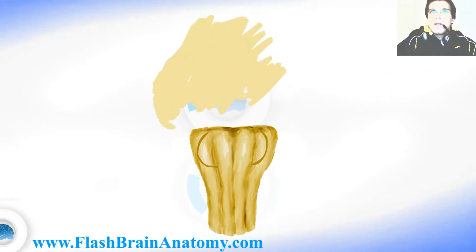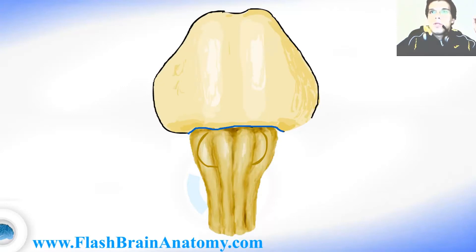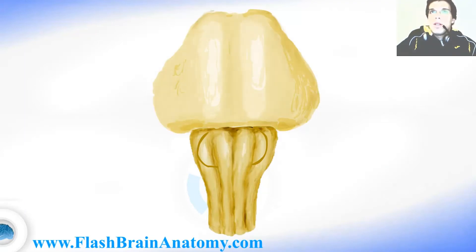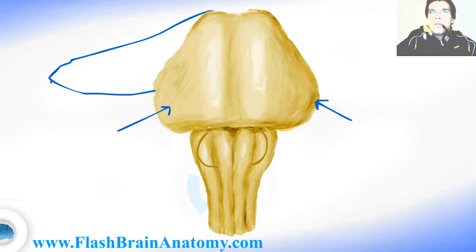Then comes the pons. In Latin it means the bridge. This part was the pons, and here is the border to the medulla oblongata. On the basal side of the pons there is not much to see. These structures over here are the peduncles that connect the pons to the cerebellum.